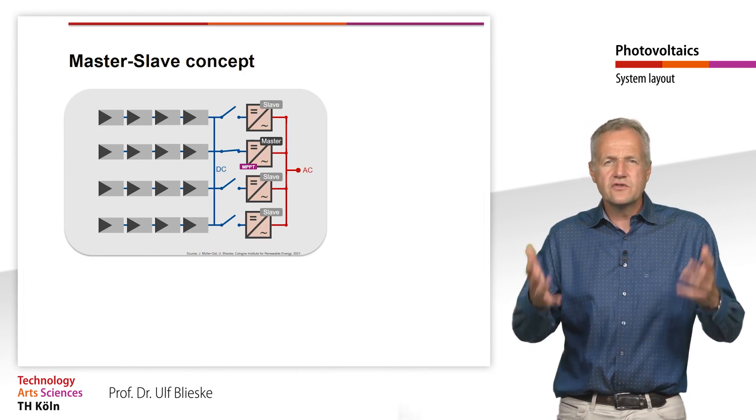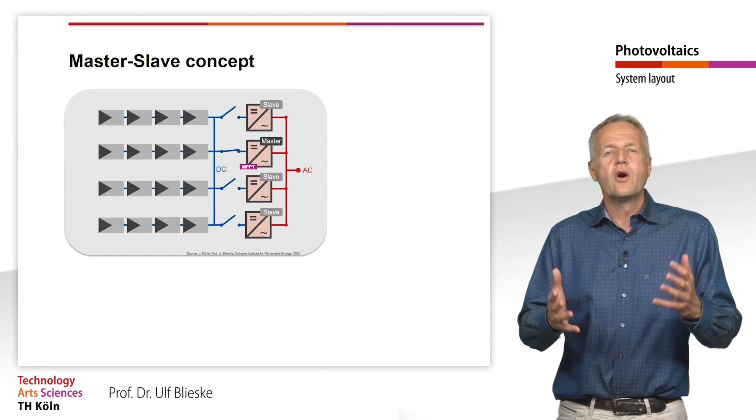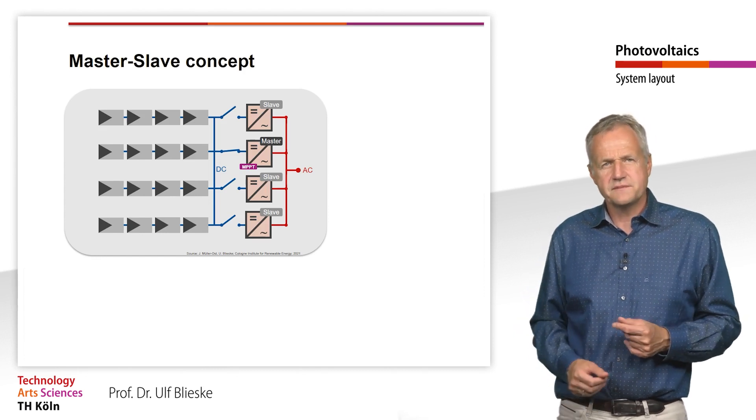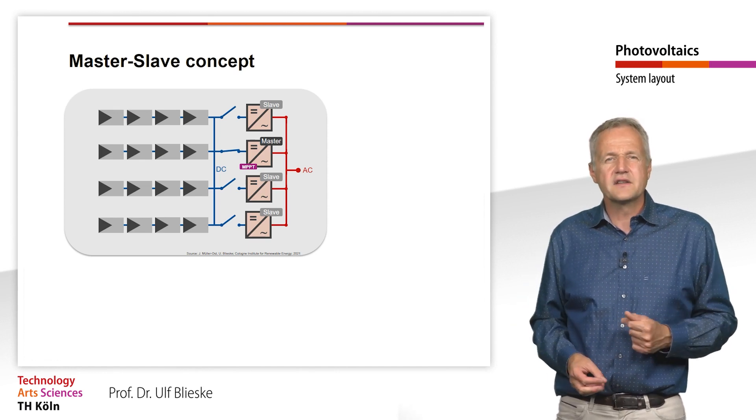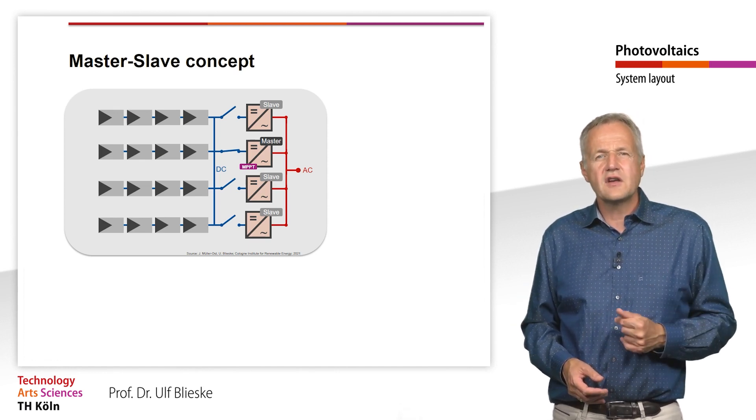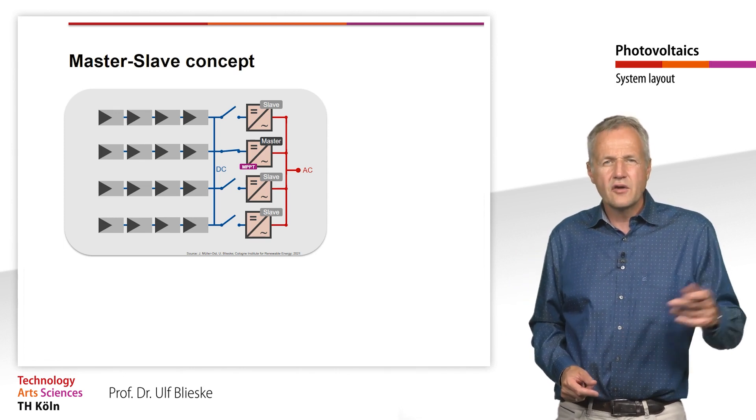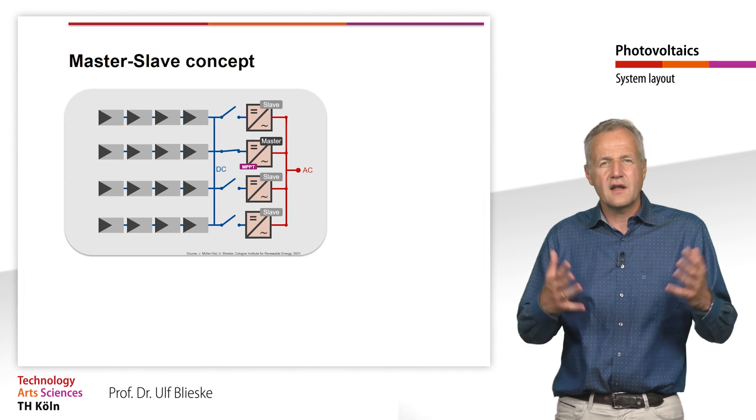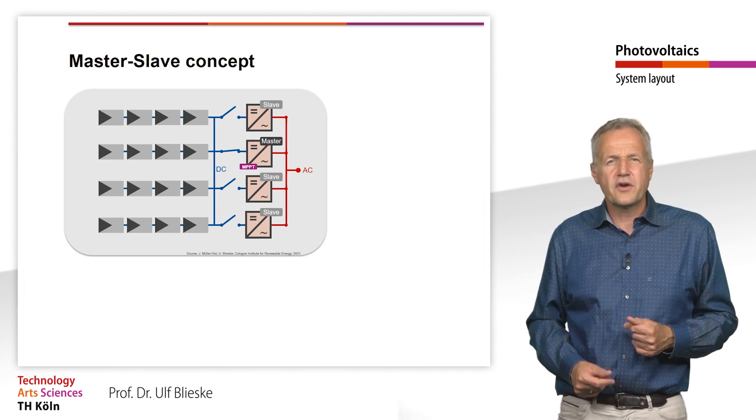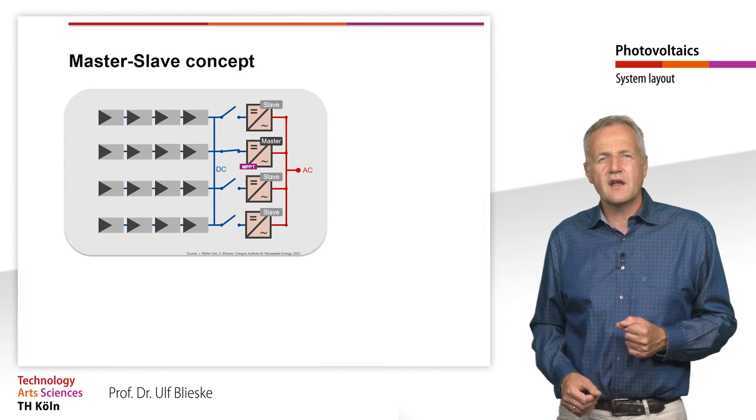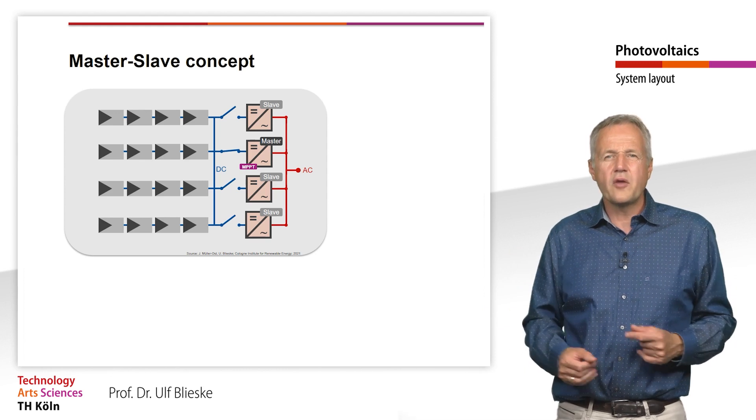Finally, I would like to introduce you to a concept that is used especially in countries with low or alternating irradiation. This system concept is based on the fact that the efficiency of an inverter decreases in the lower partial load range. We had a closer look at this in the last teaching unit. In many PV systems, however, it is precisely in this power range that a large part of the energy is generated. To counter this problem, the so-called master-slave concept is used as an alternative to the central inverter.